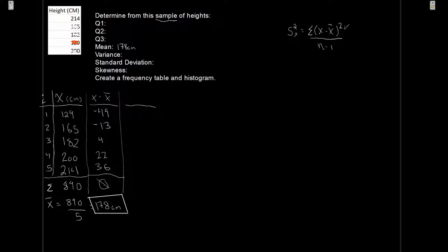Next column. We want to get the numerator here. We want the squared deviations. So x minus x bar squared. 49 squared, that's going to give us 2401. 13 squared, 169. 4 squared, that's going to be 16. 22 squared is going to be 484. And 36 squared is going to be 1296. So now we want to get the sum of our squared deviations. 1296 plus 484 plus 16 plus 169 plus 2401 is going to give me 4366.